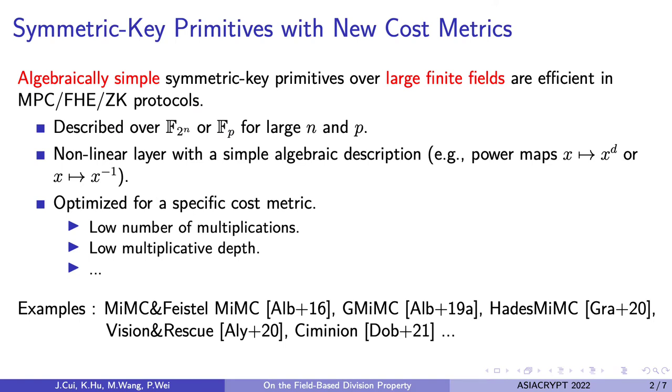The main topic is symmetric key primitives that are efficient in several applications like multi-party computation, fully homomorphic encryption, and zero-knowledge proof. In this case, designers need to reconsider which operations are costly and which cost almost free. This is quite different from usual symmetric primitives defined on binary fields. New cost metrics like low number of multiplications and low multiplicative depths are desired.